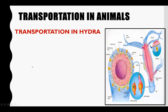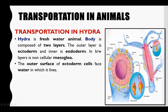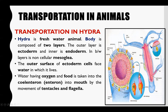First of all, we will study transportation in hydra. Hydra is a freshwater animal. Its body is simple and made of two layers, so it is called a diploblastic organism. The outer layer is called the ectoderm and the inner body layer is called the endoderm, and a mesoglea-like material is present between them through which nutrients and waste are exchanged.